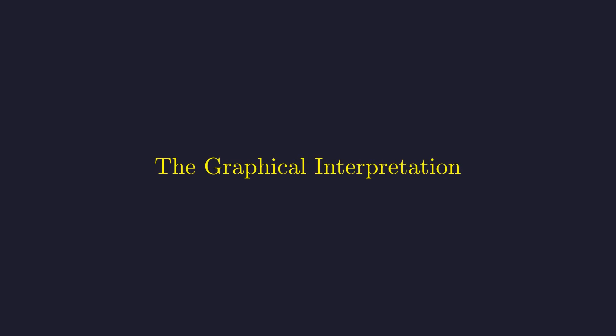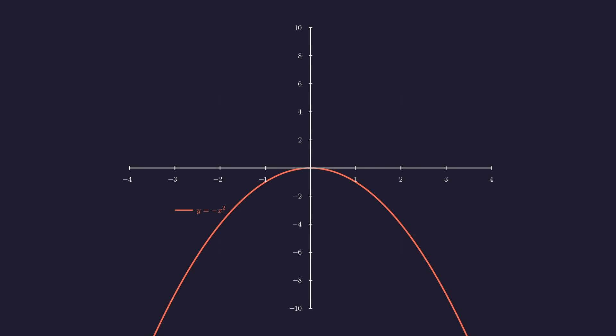Perhaps the clearest way to see this difference is to graph both functions. Let's see what these look like on a coordinate plane. The red curve shows y equals negative x squared. Notice how it opens downward.